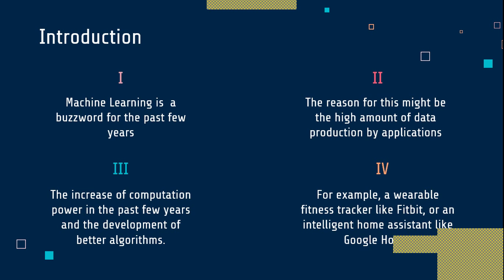The third reason behind the popularity of machine learning and AI is increased computation power — meaning your processor, hard disk, network, wired and wireless connections. Because GPUs introduced by NVIDIA allow data to be processed in parallel rather than serially, with thousands or millions of data points processed in parallel sequences, your overall processor speed is greatly increased.